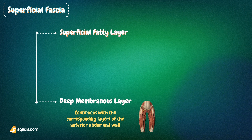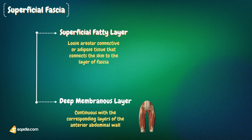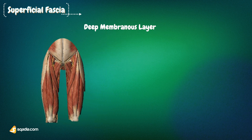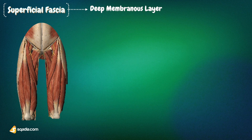The superficial fatty layer is a layer of loose areolar connective or adipose tissue that connects the skin to the layer of fascia. The membranous layer is loosely attached to the deep fascia of the thigh, except near the inguinal ligament, where it is firmly attached along a horizontal line.